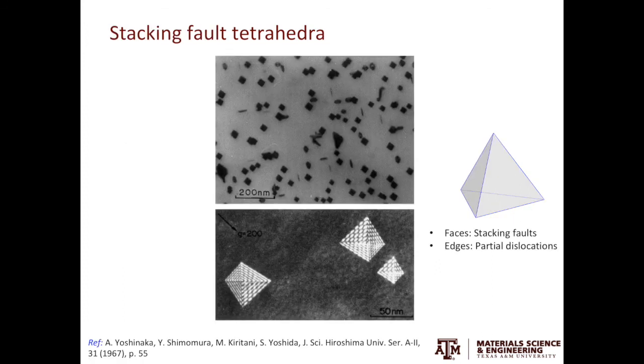These are called stacking fault tetrahedra. These TEM micrographs were taken from a classical paper by Yoshinaka and Shimomura and co-authors. These radiation-induced defects have the tetrahedral morphology. Each face is a stacking fault and each edge is a partial dislocation. The formation of stacking fault tetrahedra and their interactions with other dislocations is beyond the scope of this video. If you are interested in this topic, you can find more information in the introduction to dislocation book.